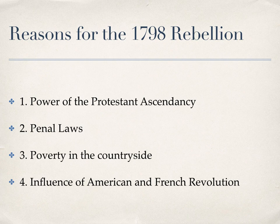There were four main reasons for the 1798 rebellion. The first was the power of the Protestant Ascendancy — mainly the Anglican Church. They were only about 15% of the population but they controlled Parliament and controlled everything. Another reason was the Penal Laws; while some had been reduced in the 1770s, there were still laws against Catholics and Presbyterians that made them subject to this Protestant Ascendancy.